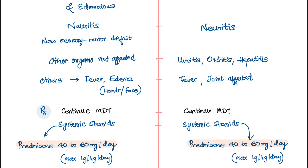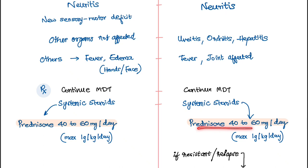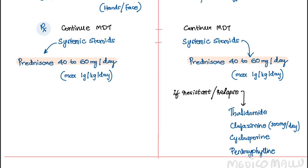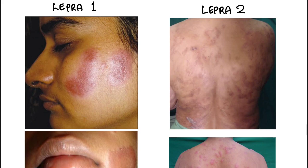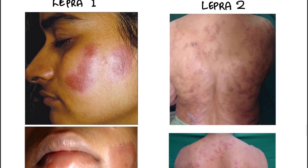These reactions typically occur during the multi-drug therapy treatment process. There is a high tendency to stop medication, but we should not stop MDT — we must continue it. We can supplement with systemic steroids, preferably prednisolone 40 to 60 mg per day, with a maximum dose of 1 mg per kg per day depending on severity. In ENL, if still relapsing, persistent, or resistant to steroids, thalidomide, cyclosporine, pentoxifylline, methotrexate, or high doses of clofazimine can also be given.